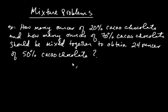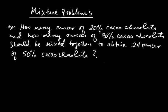The basic idea is that you're taking this pretty weak chocolate — 20% — and mixing it with really dark chocolate, ending up with 24 ounces of 50%. The 50% is somewhere between 20 and 70%, so the question is how much of each should you mix to get 24 ounces of 50% chocolate?